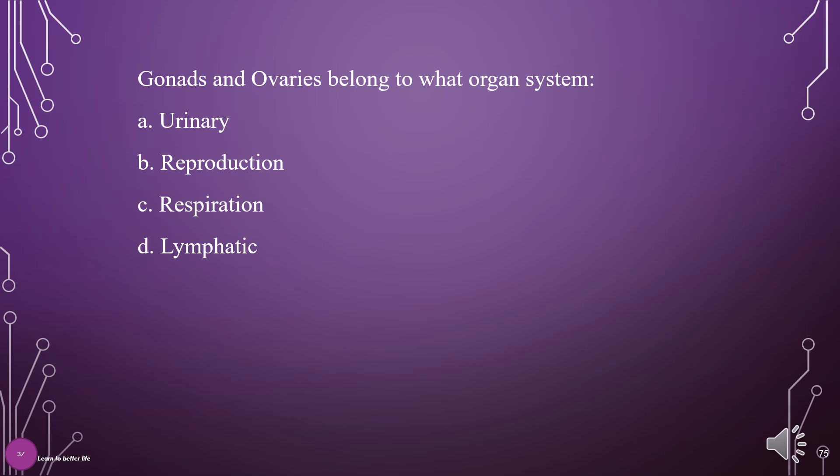Gonads and ovaries belong to what organ system? A. Urinary, B. Reproduction, C. Respiration, D. Lymphatic. The answer is B: Reproduction.